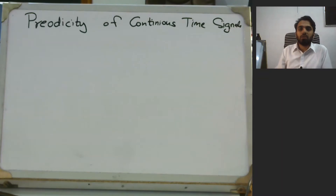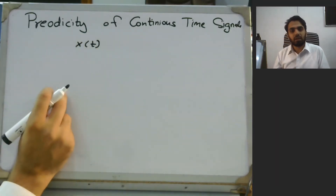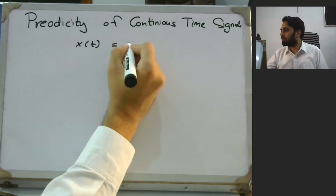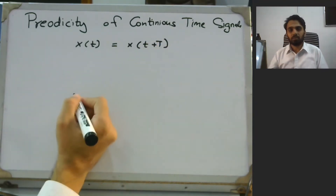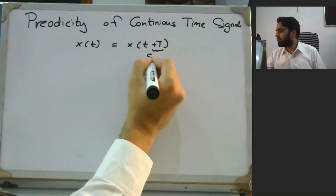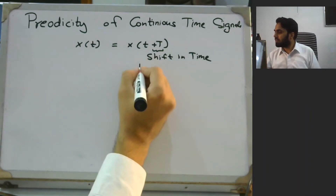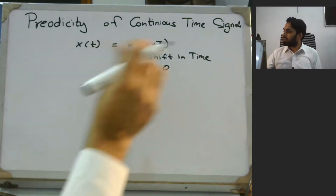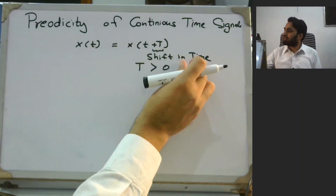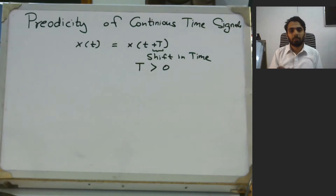For the periodicity of continuous time signals, it means that we have a signal x(t). This signal can only be periodic if it satisfies the condition x(t) = x(t + T), where capital T is a shift in time and T must be greater than zero. If there is a shift in time such that that shift does not affect the original signal, this means the signal is periodic.